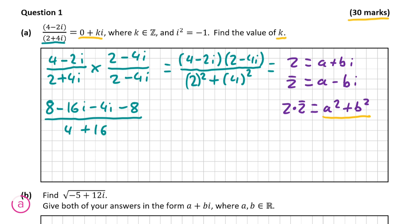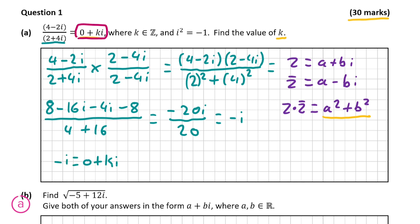After simplifying we have 8 - 16i - 4i - 8 divided by 4 + 16, and some simple arithmetic will show that this is equal to -20i divided by 20, which is simply equal to -i. Remember our question told us that all of this was equal to 0 + k·i, so it can be easily shown that k is equal to -1. This is our final answer and finding this will give you the full 10 marks for this question.